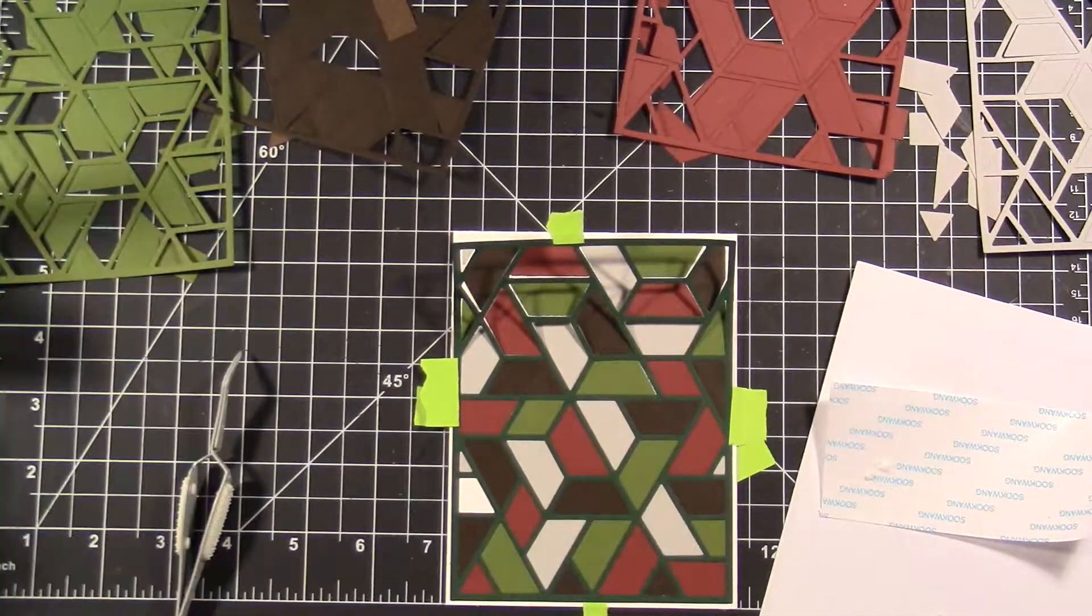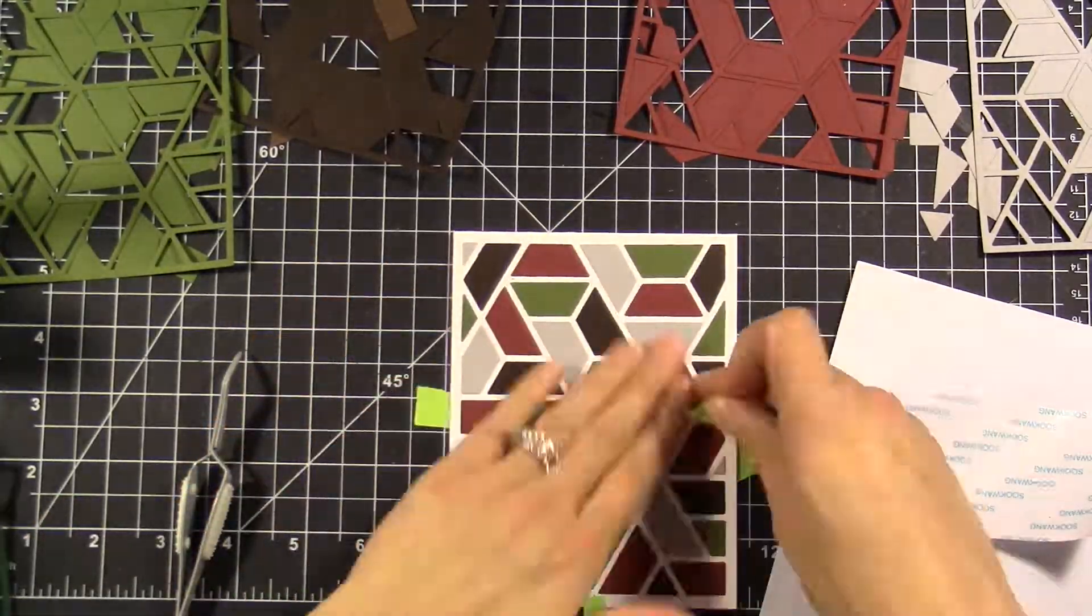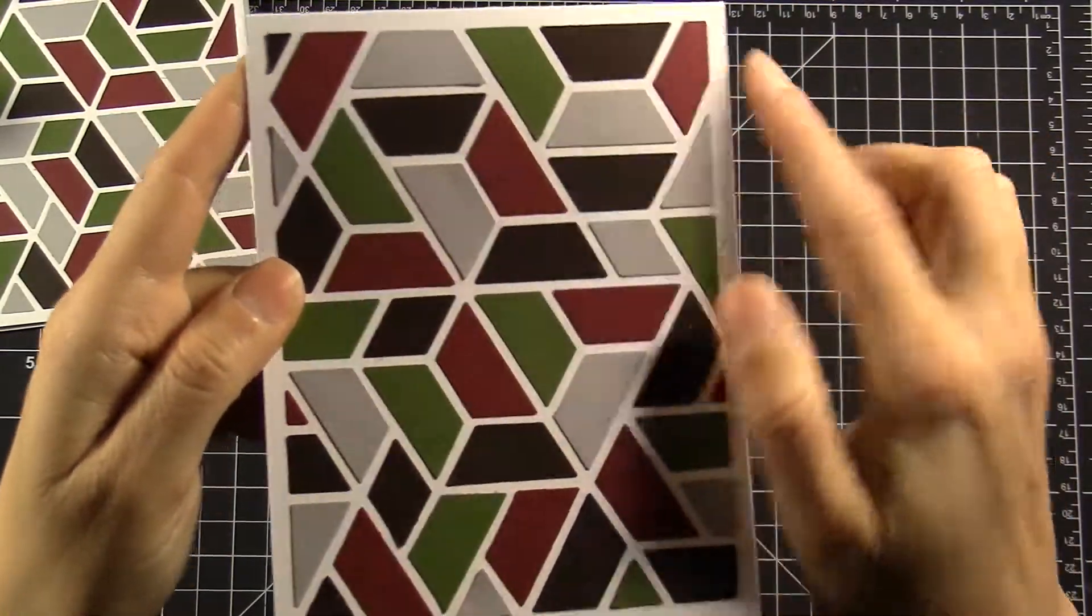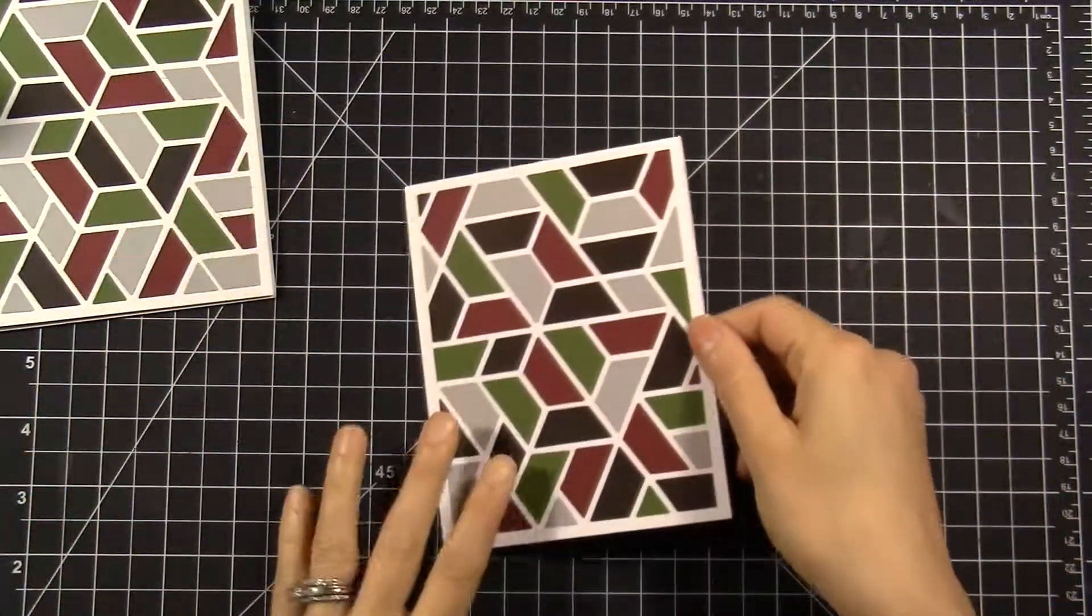My card front is made from a heavyweight cardstock—it's 120 pounds from Simon Says Stamp. You'll see this card front; I love how it turned out. It reminds me of a Christmas sweater.